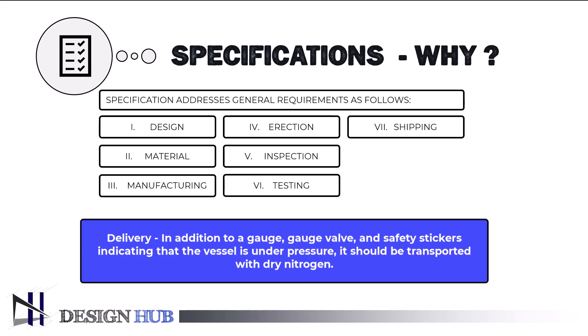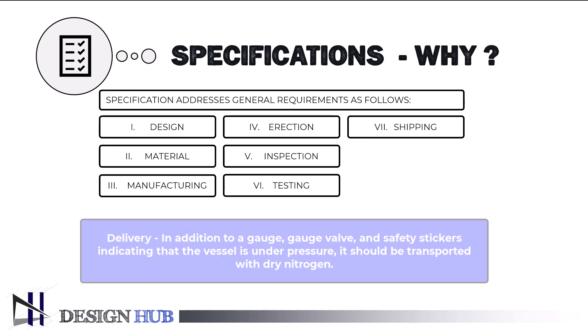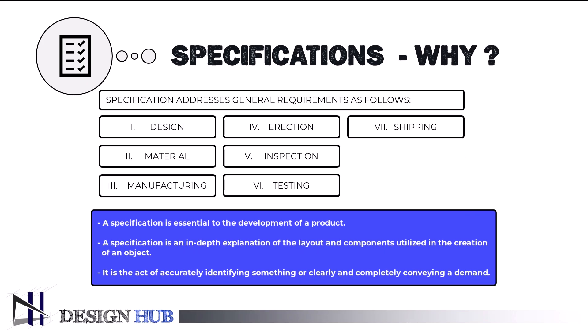Delivery: in addition to having a gauge, gauge valve, and safety stickers showing that the vessel is being shipped under pressure, vessels should be shipped with dry nitrogen. Since specification addresses general requirements, we must need it to fulfill the development of the product. A specification is an in-depth explanation of the layout and components utilized in the creation of an object — it is the act of accurately identifying something or clearly and completely conveying a demand.